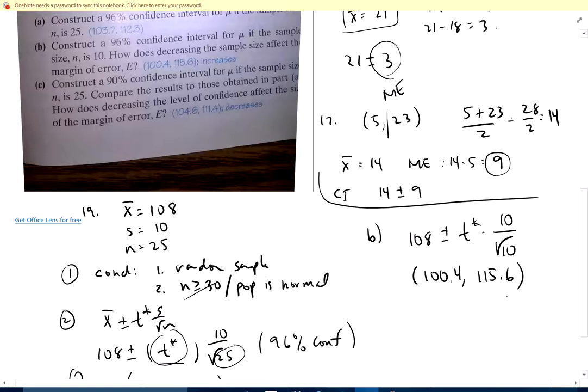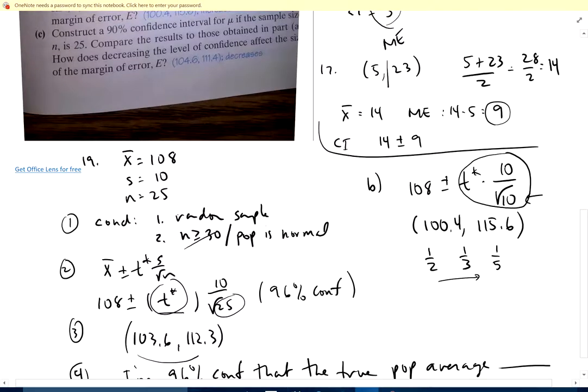It says how does decreasing the sampling size affect the margin of error? Well, if I got this and I make the bottom number smaller, that's going to make the whole fraction bigger. Think about this: 1 half is 50%, 1 third is 33%, 1 fifth is 20%. So as the bottom gets bigger, I'm dividing by a bigger number which makes the fraction smaller. The other way is to recognize, just look at them. This margin of error is, if I find the middle I can go halfway up and down, well this one's bigger. Margin of error is going to get bigger because the interval is bigger.